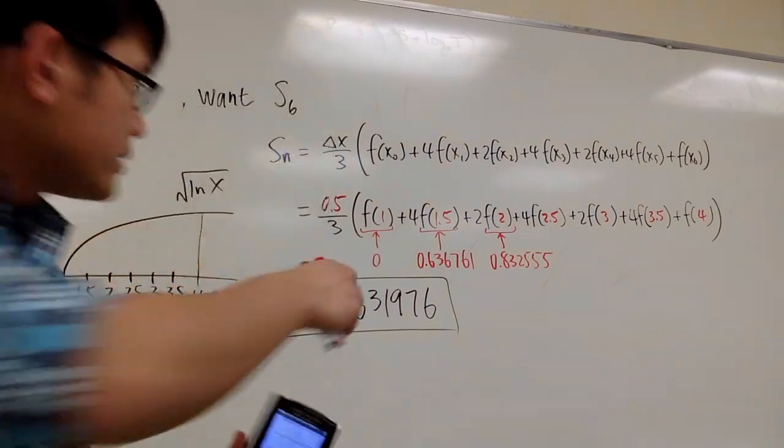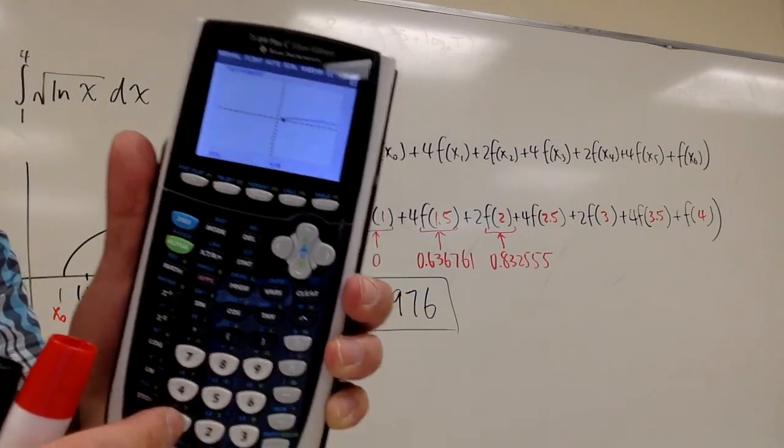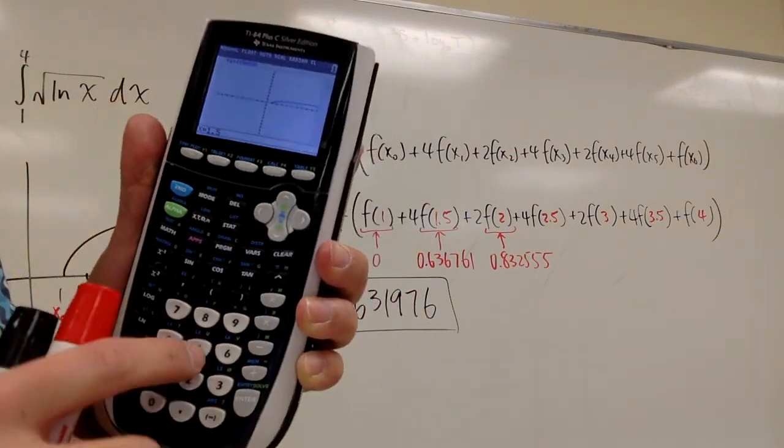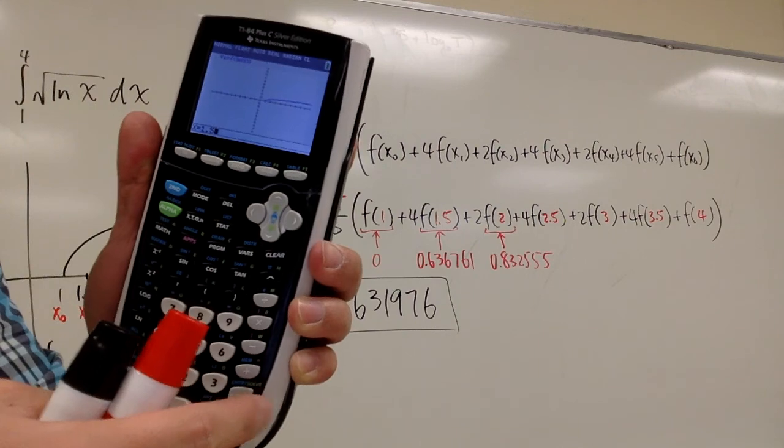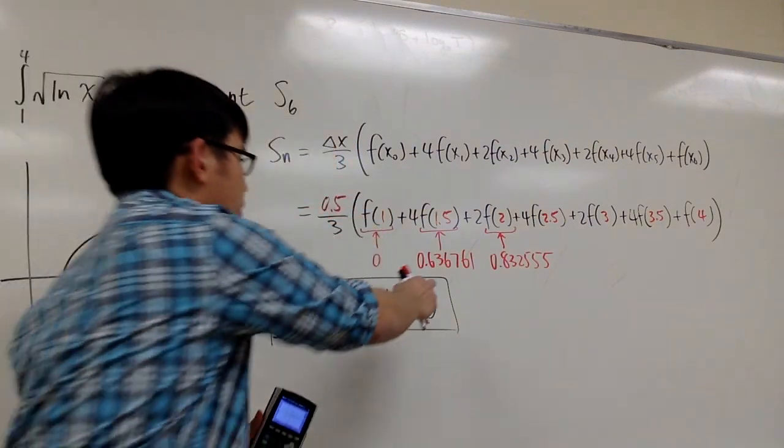And then I need to know what's f of 1.5. Well, I can just overwrite it, just type in 1.5. And then I hit enter, I get that for the y value, which I wrote down right here for you guys already.